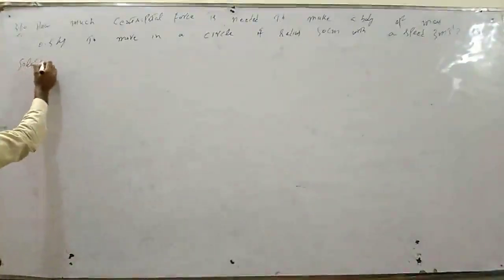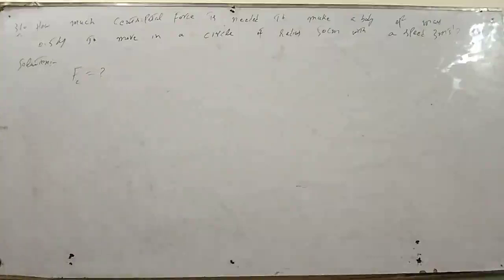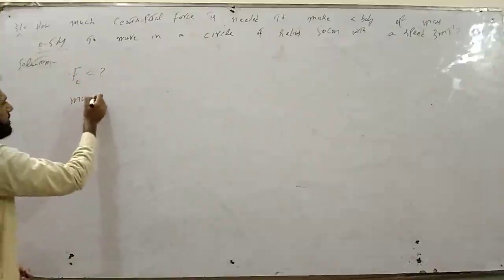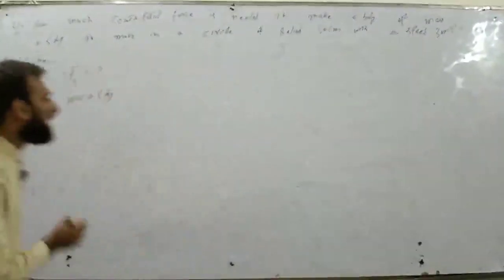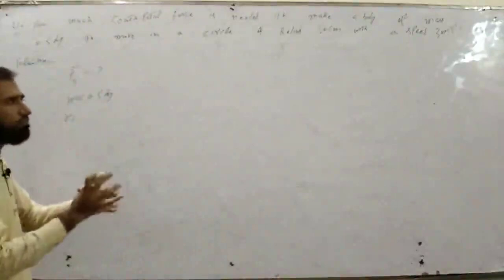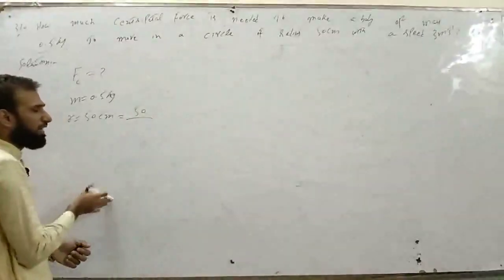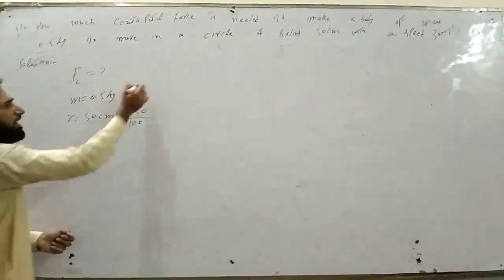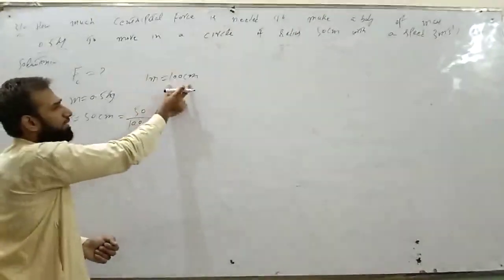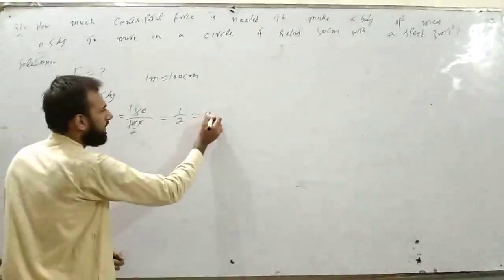Solution: centripetal force find करनी है। Body का mass 0.5 kilogram। Circle का radius 50 centimeter - इसको meter में convert करो: 50/100 = 0.5 meter। एक meter में 100 centimeter होते हैं, centimeter छोटी quantity है - meter में जाने के लिए 100 पर divide करना। R = 0.5 meter। Velocity V = 3 meter per second।